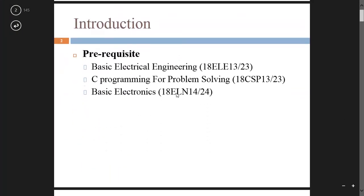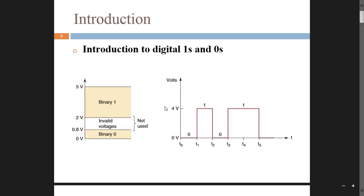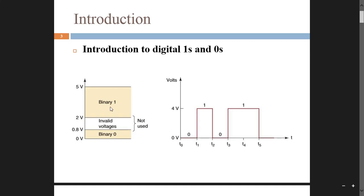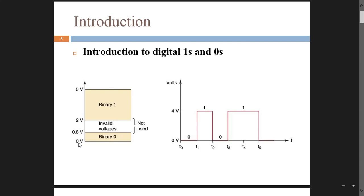The prerequisites to study this subject are: Basic Electrical Engineering, C Programming for Problem Solving, and Basic Electronics. Now, what is a digital signal? Digital signals are signals represented in terms of digits. The digits used are 0 and 1. Because only two digits are used, it is also called binary — 'bi' stands for two.